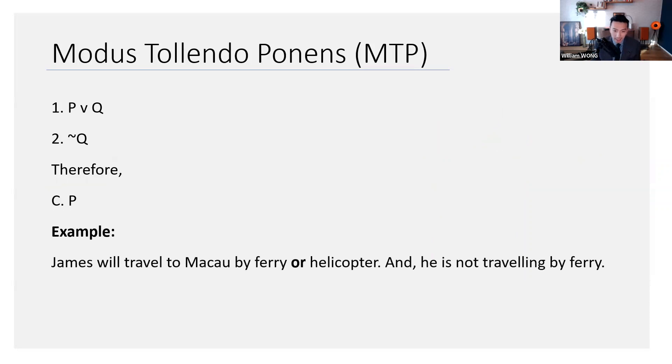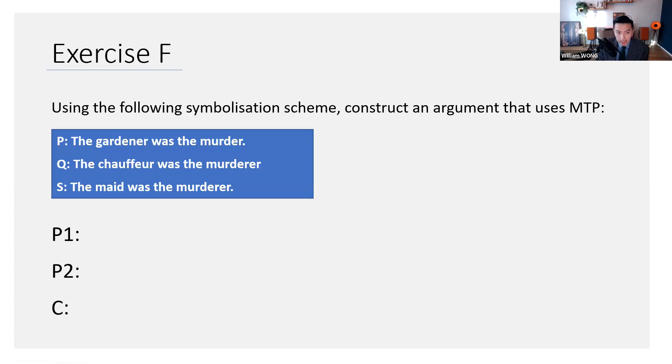Cool, so here's an example. James will travel to Macau by ferry or helicopter, right? I guess you could drive now, but let's just say, you know, let's just say the premise is true, that you can travel to Macau by ferry or helicopter. So he is not travelling by ferry, not Q, therefore he must be travelling by helicopter. Modus tollendo ponens. That's the last inferential rule before the test.